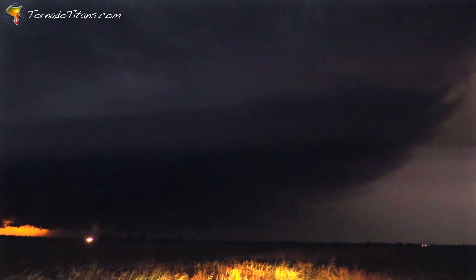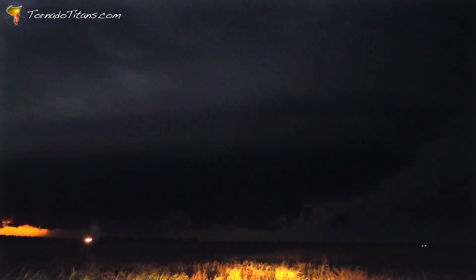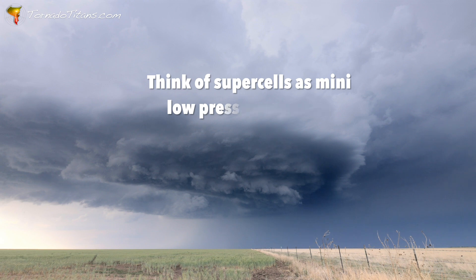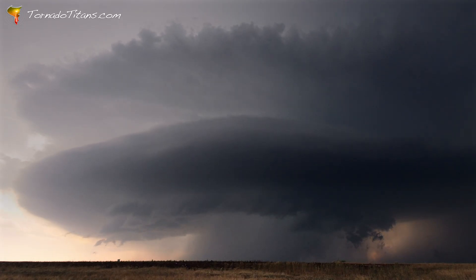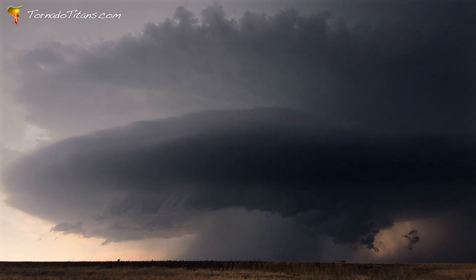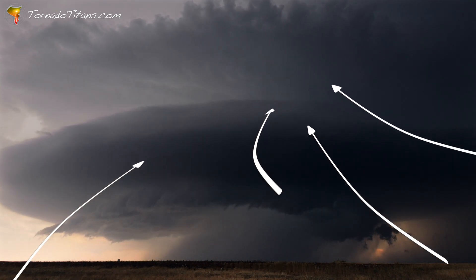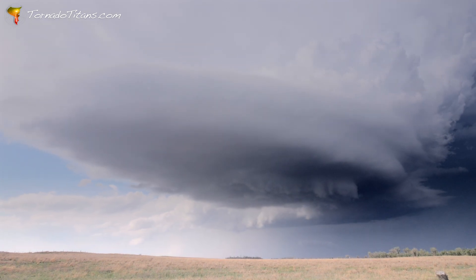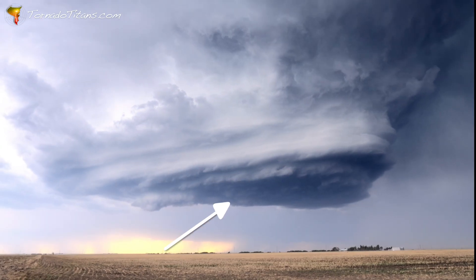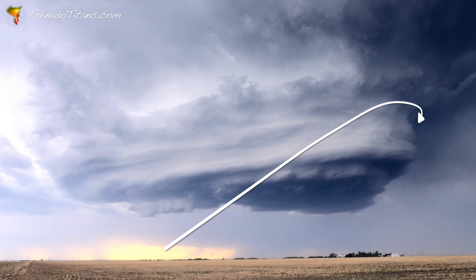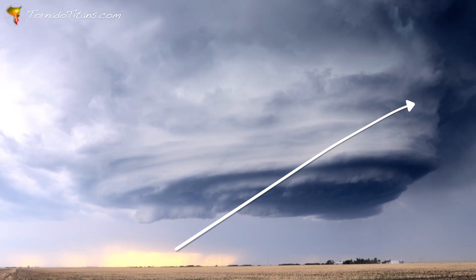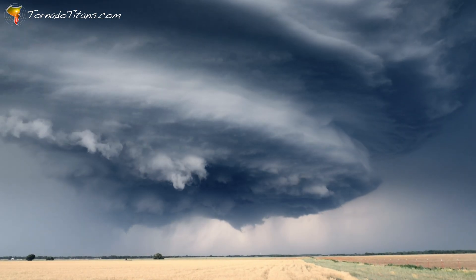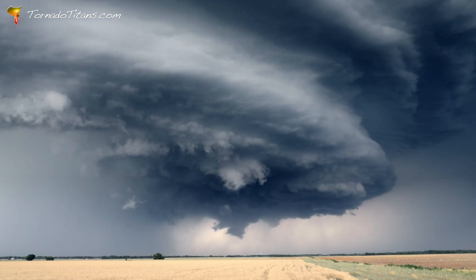The mesocyclone doesn't just spin — it reshapes the entire storm around it, like a potter molding clay on a wheel. At its core, the rotating updraft creates an intense drop in pressure, often exceeding 10 millibars. This sudden low pressure acts like a massive atmospheric vacuum, drawing air inward from all directions. Because the mesocyclone is rotating, the inflowing air can't just rush straight in; instead it spirals upward along the edges of the updraft, forming those dramatic curved cloud bands we call striations. These striations are more than just beautiful — they're the storm's fingerprints, revealing the power of its rotation.